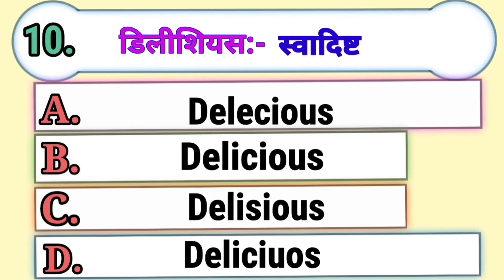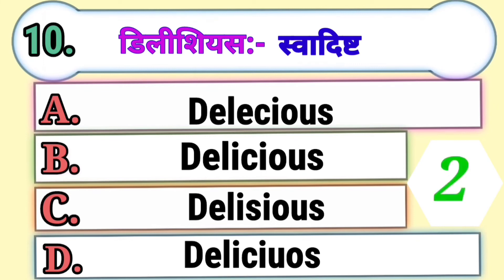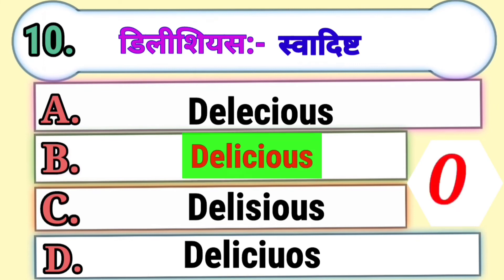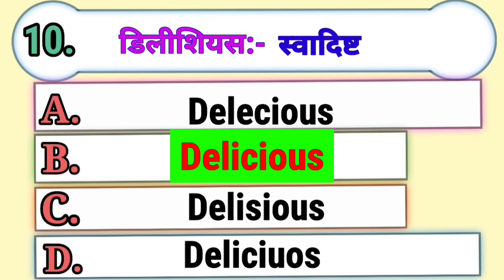Question 10. Delicious means Swadisht. Which is the correct spelling of delicious? Option A, Option B, Option C, or Option D. The correct answer is Option B, Delicious.